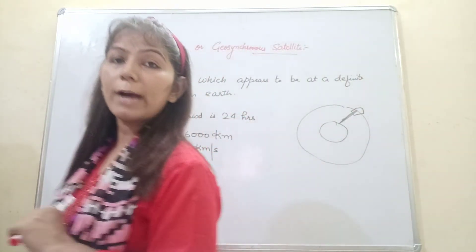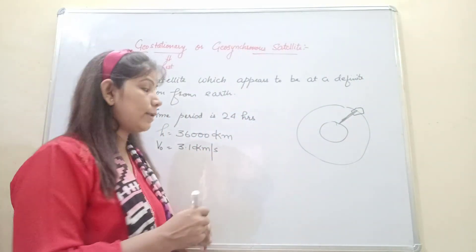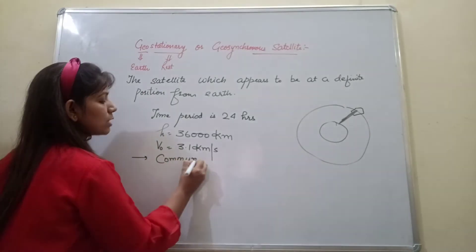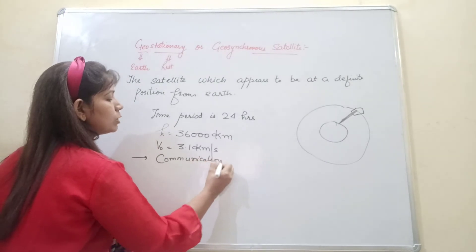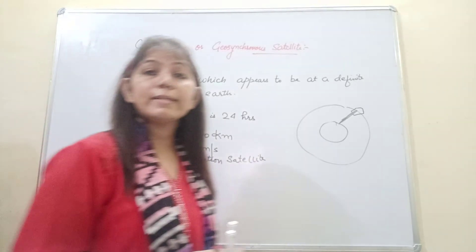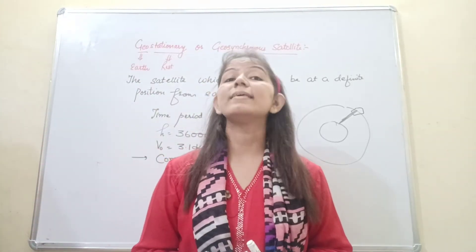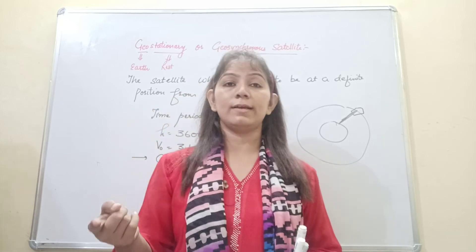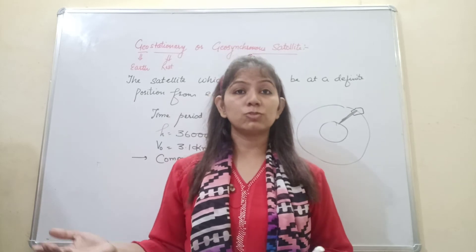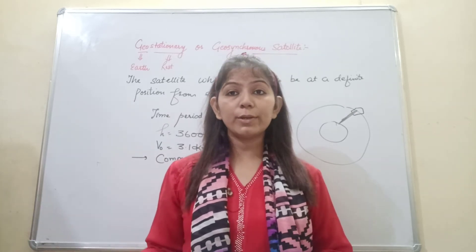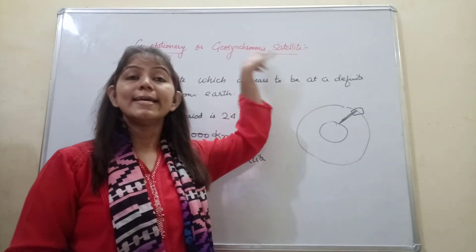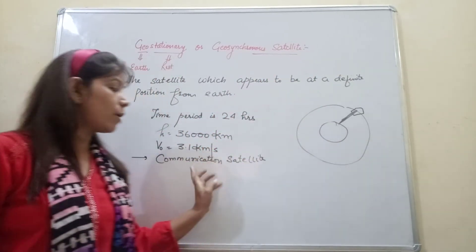We also give this satellite another name — communication satellite. It is known as a communication satellite because it helps us to communicate. For example, people who are sitting in space communicate through this satellite. That is why it is called a communication satellite.